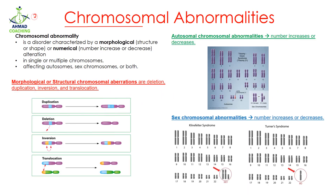Hey learners, welcome to Ahmed Coaching and I'm your teacher Dr. Anam. Today we will study about chromosomal abnormalities. They are elongated structures which are present in the cell during cell division. A chromosomal abnormality is a disorder characterized by morphological — meaning structural, relating to shape — or numerical alterations.